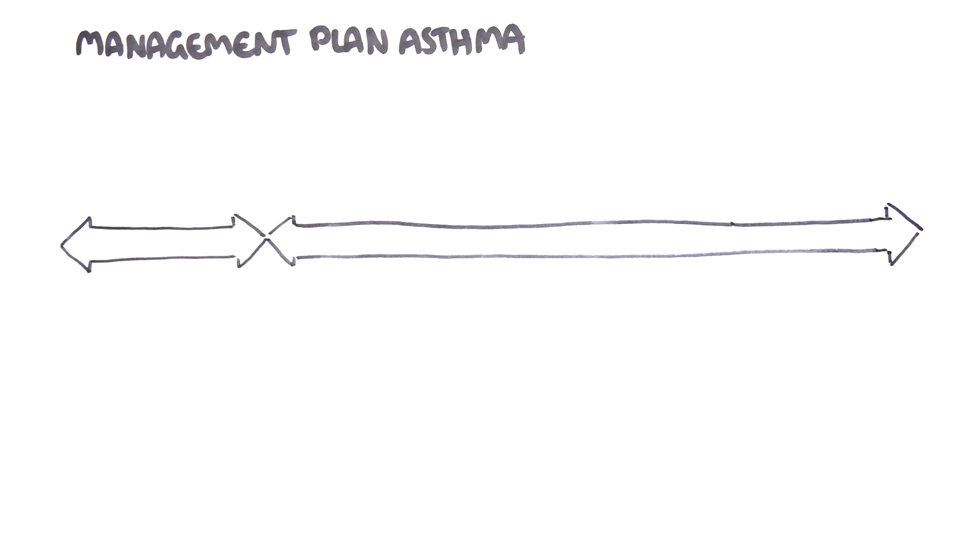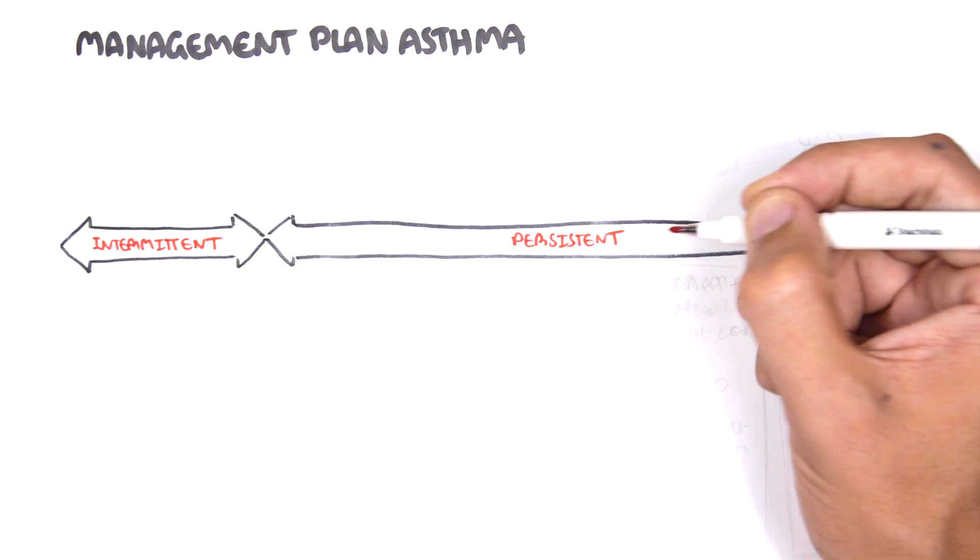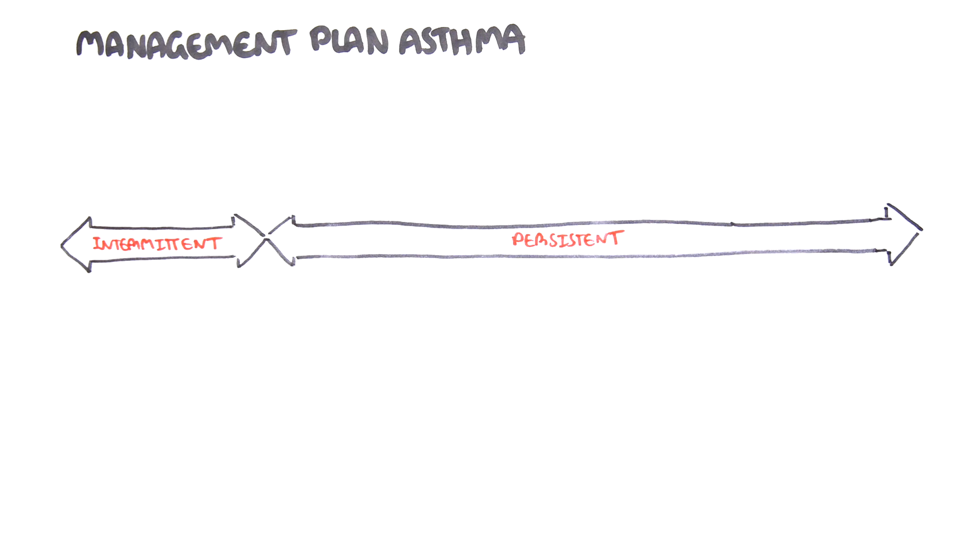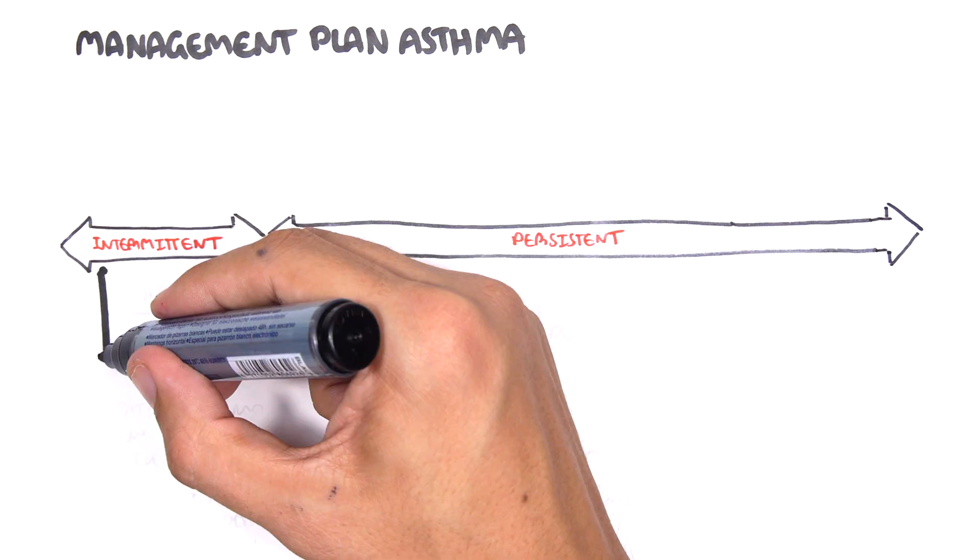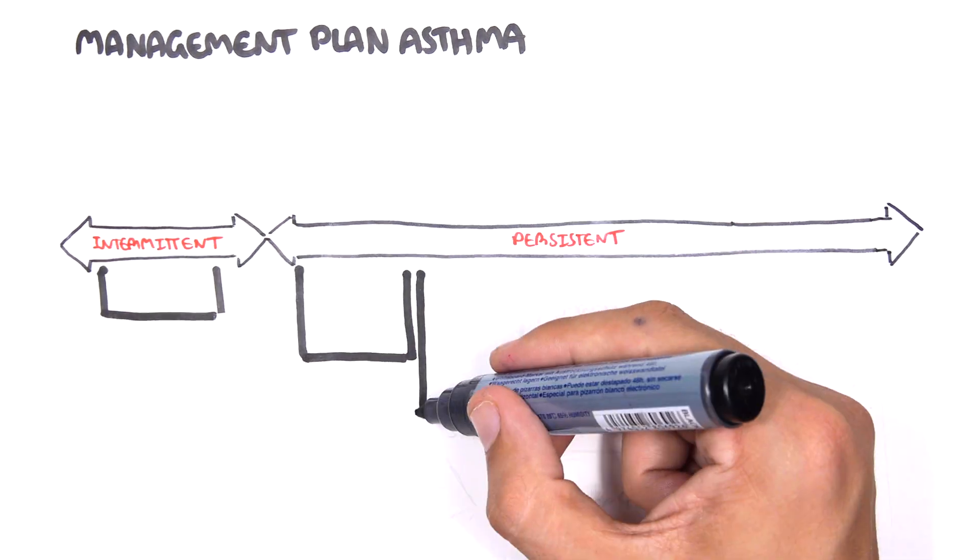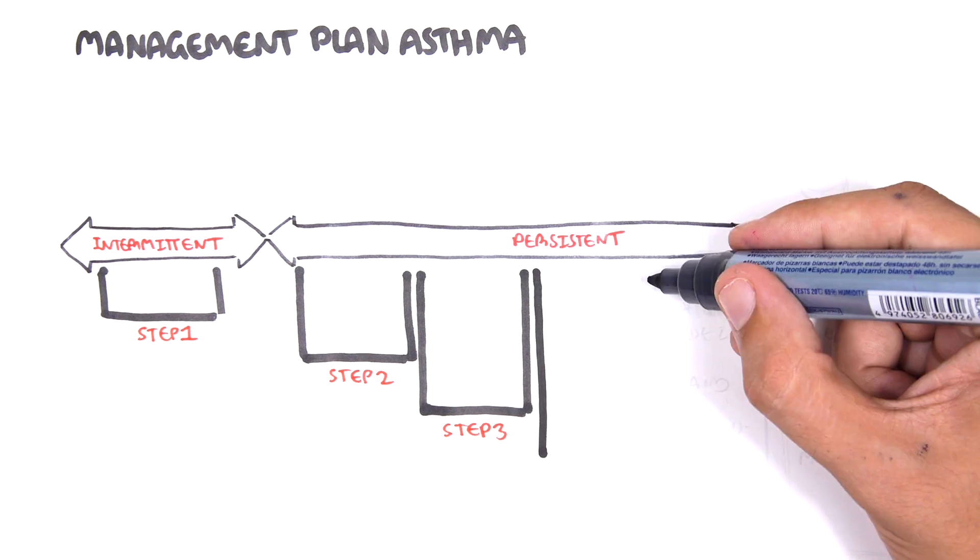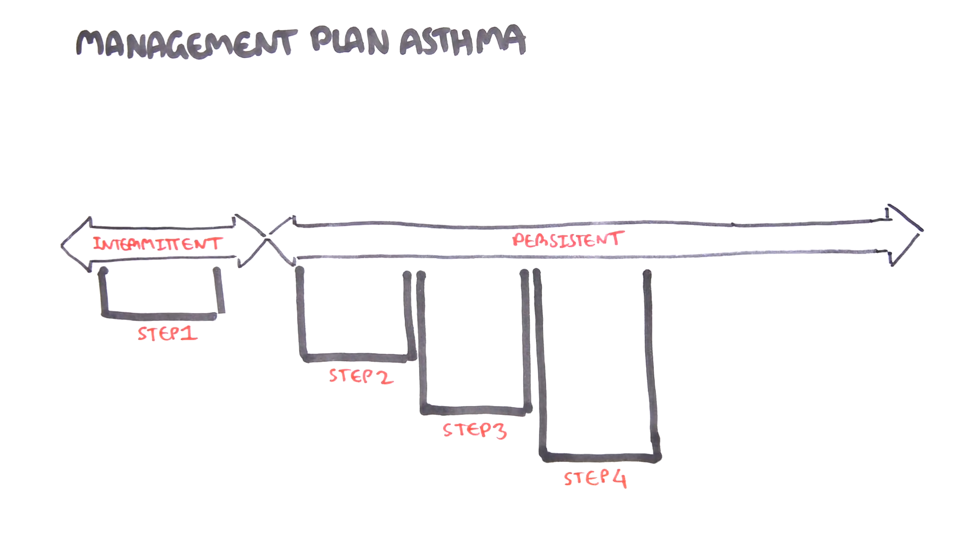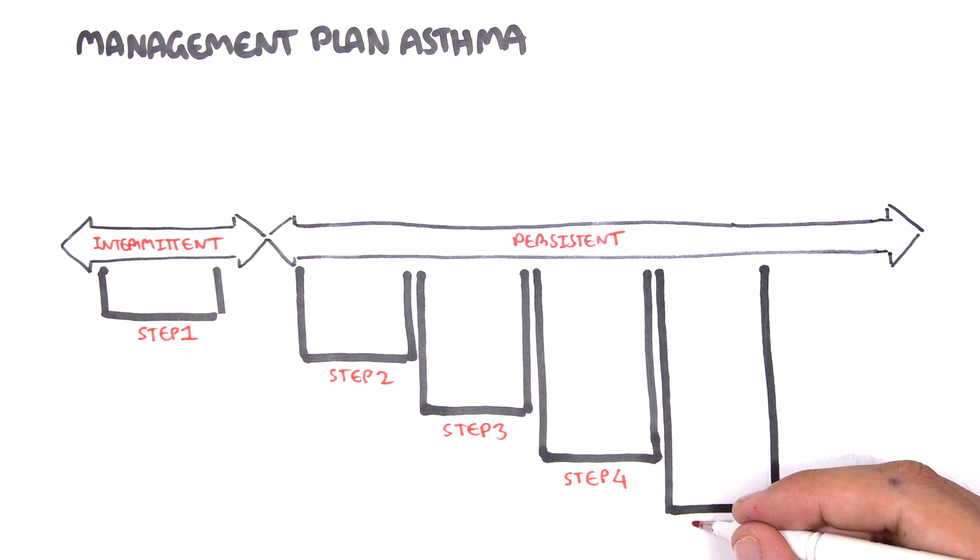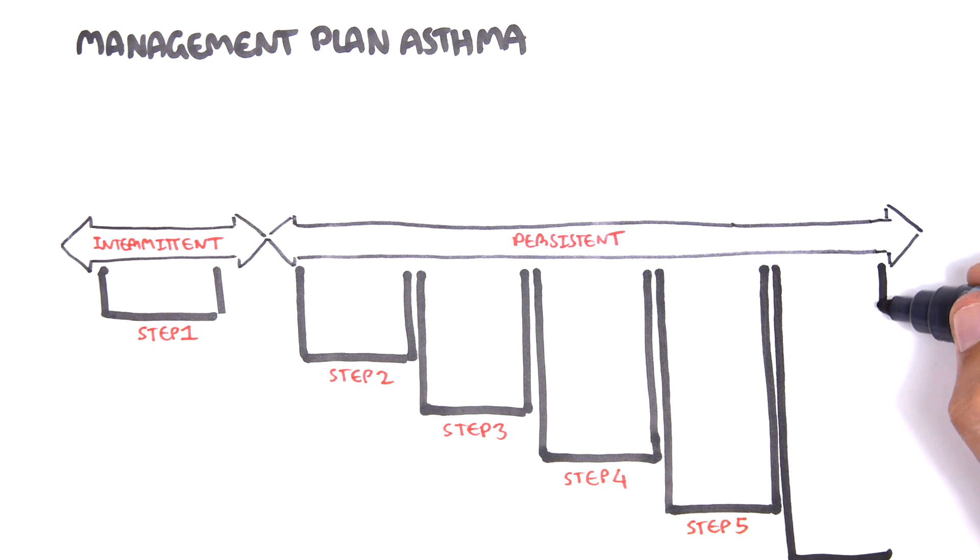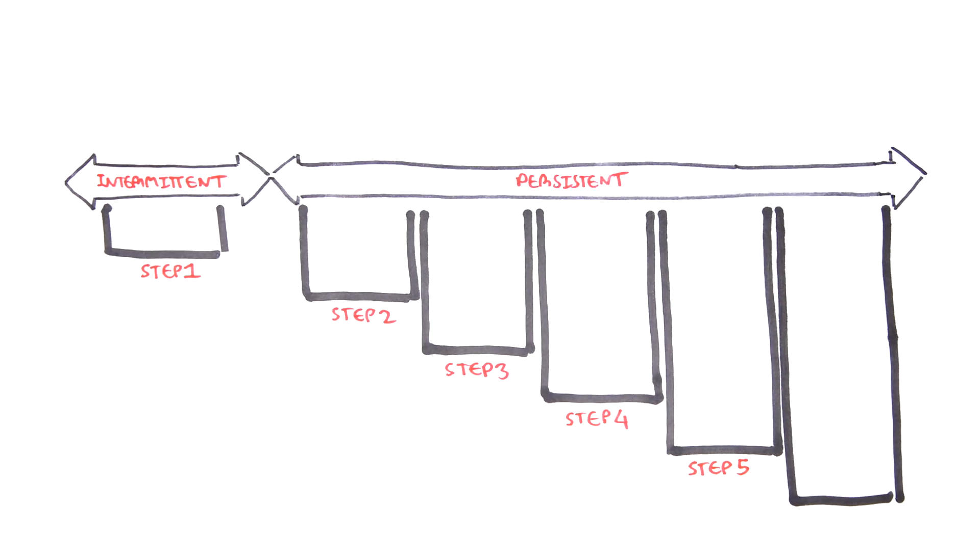In general, asthma can be intermittent or persistent. Intermittent means it comes and goes, such as exercise-induced asthma. Persistent means that it's always there. The STEP approach covers 6 steps. Step 1 is for intermittent asthma. For persistent asthma is step 2 to 6, with 6 being the most severe.